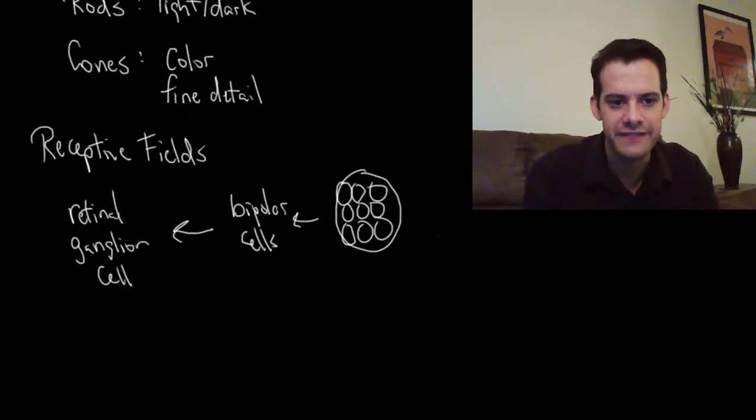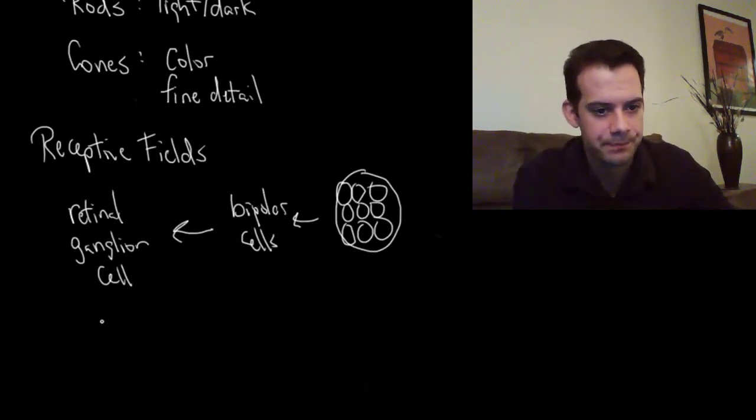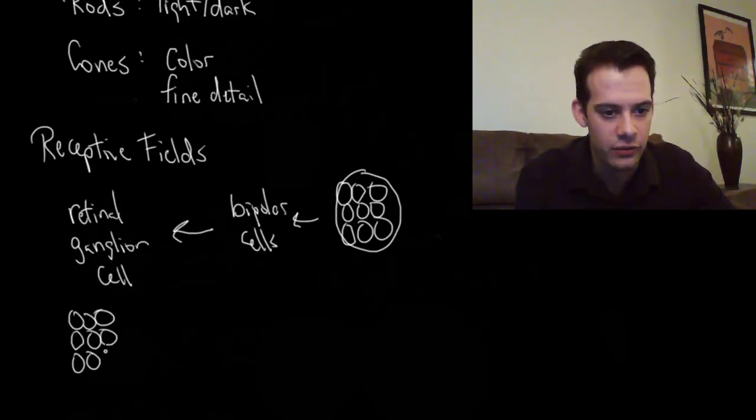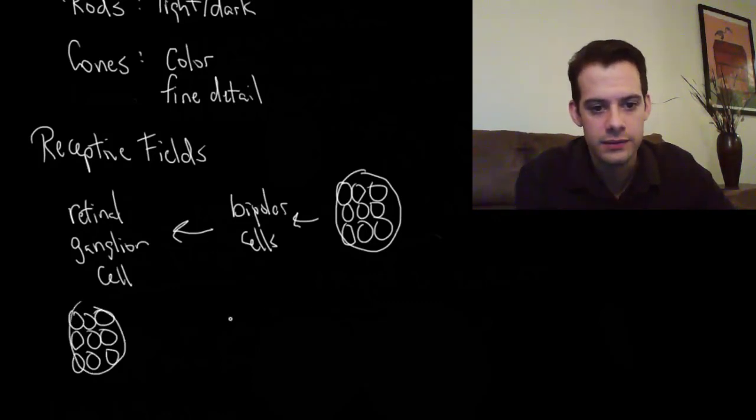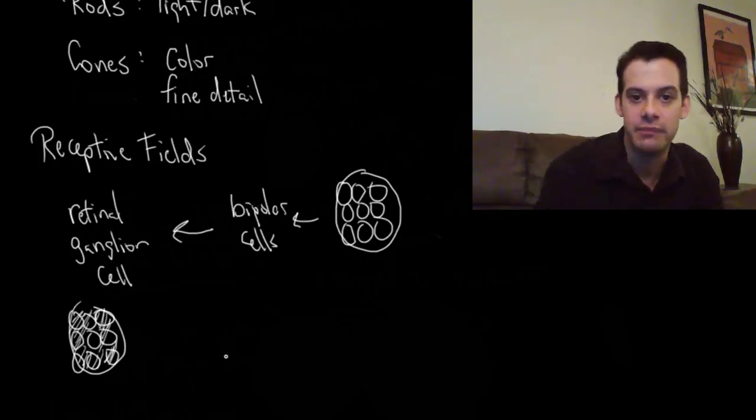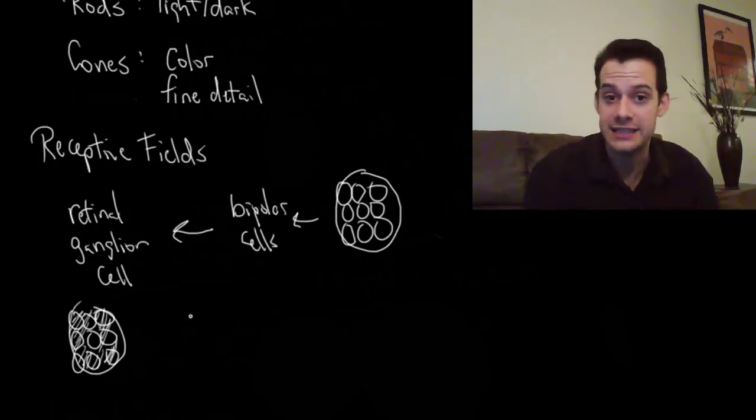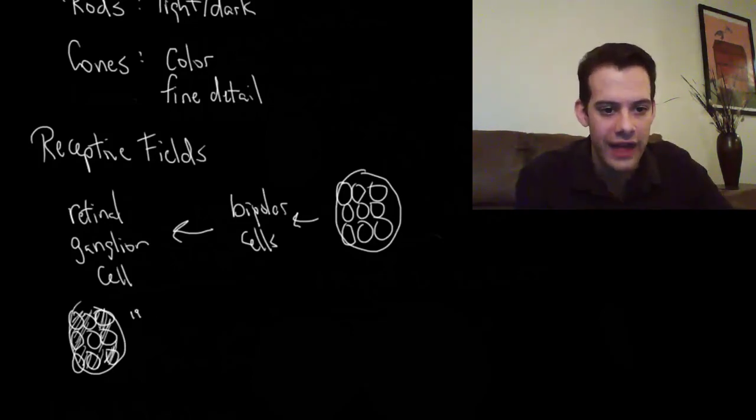We can break these receptive fields up into two main types. Some of these receptive fields fire most intensely when it's dark on the outside of the receptive field but there's a spot of light in the middle. And when that happens these cells fire very intensely. That type of receptive field would be called an on-center receptive field.